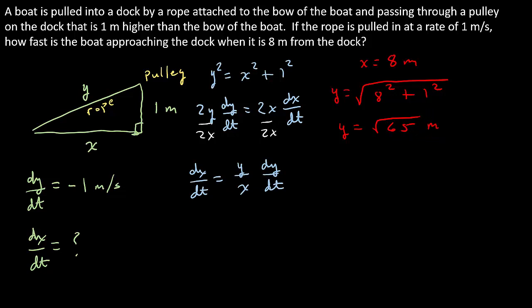Alright, so now let's go ahead and just plug everything in. So I get DXDT is equal to the square root of 65 over 8, just plugging in the X and the Y, times DYDT, which is negative 1, and that is going to give me negative 1.01 meters per second.